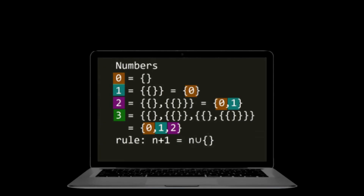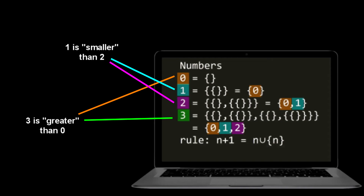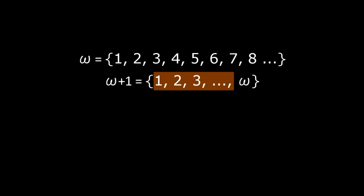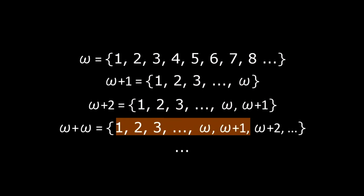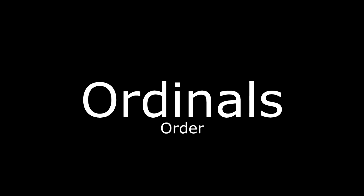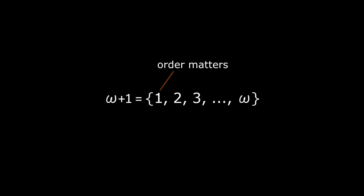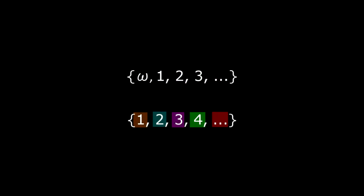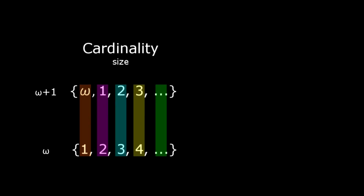Now that we have defined numbers, we can introduce terms such as greater or smaller. If we continue this pattern, it is conceivable that there is a set containing all the natural numbers as its elements — this is often represented as omega. We can go past omega and have omega plus 1, omega plus 2, and so on. This way of defining numbers is what we call ordinals. Ordinals focus on order, not size — size is known as cardinality. The cardinality of omega plus 1 and omega are the same, while their ordinality is not.